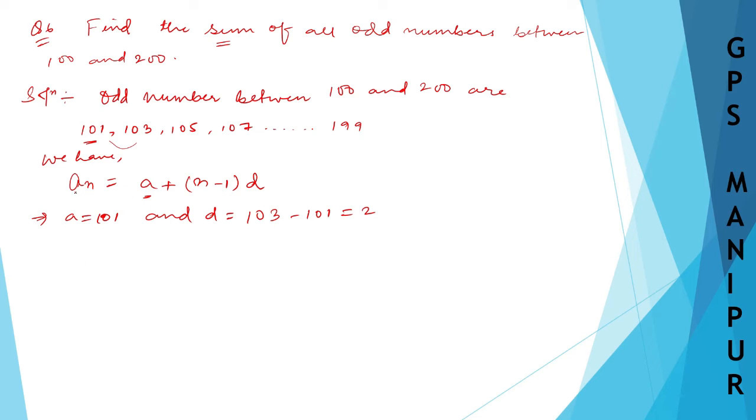So An, that is the last term, let us calculate the last term 199. So An equals 199 equals A. A is 101 plus n minus 1 and D is 2. So 199 equals 101 plus 2n minus 2. So 2n minus 2.